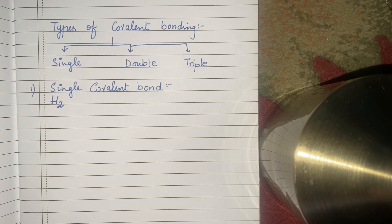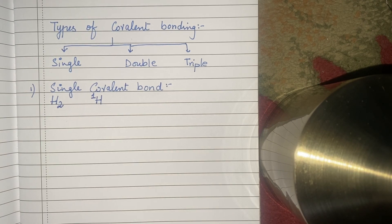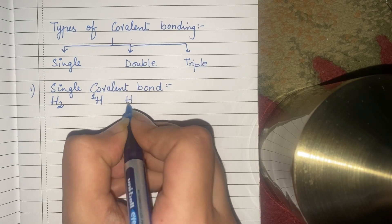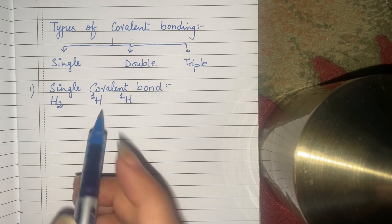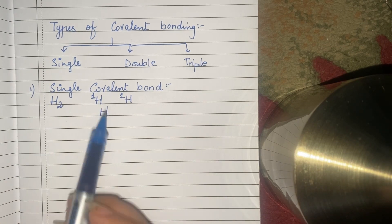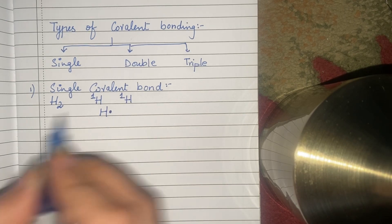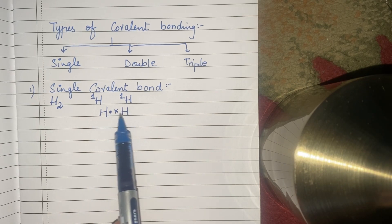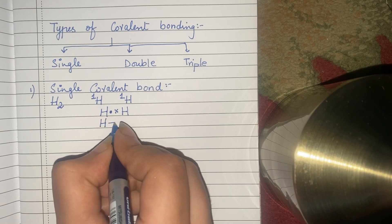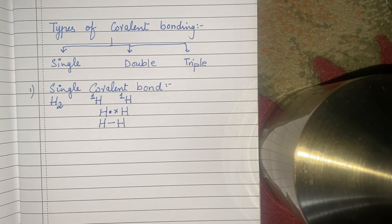Let us suppose that we have H2. In H2, we know that one hydrogen has one electron — it has only one shell, and if we have two electrons in the first shell, then it will be stable. The second hydrogen also has one electron. If both share their one electron, then they will be stable. This hydrogen has 2 electrons and this hydrogen also has 2 electrons. This type of bond is known as single covalent bond — the bond formed by the sharing of one electron from each atom.